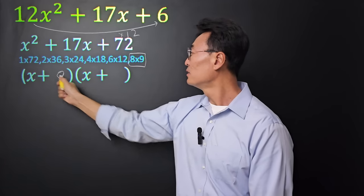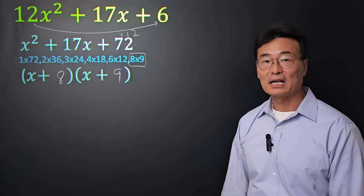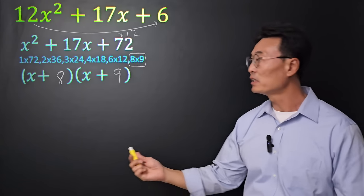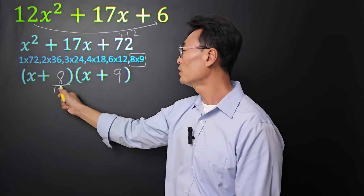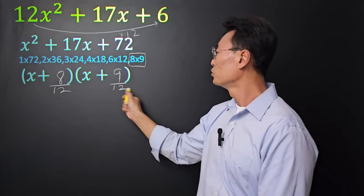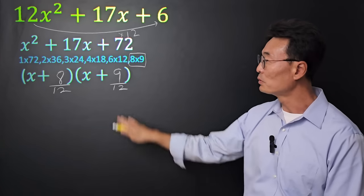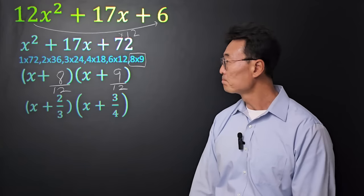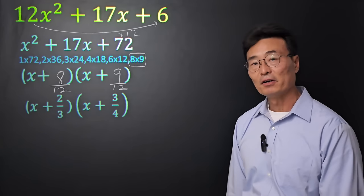So I'm going to put 8 here and I'm going to put a 9 here. Next. You know that 12 that we multiplied? Where did it go? Well, we multiplied by 12, so we're going to divide by 12 here. Then, once we reduce the fractions, it becomes x plus 2 over 3 and x plus 3 over 4.